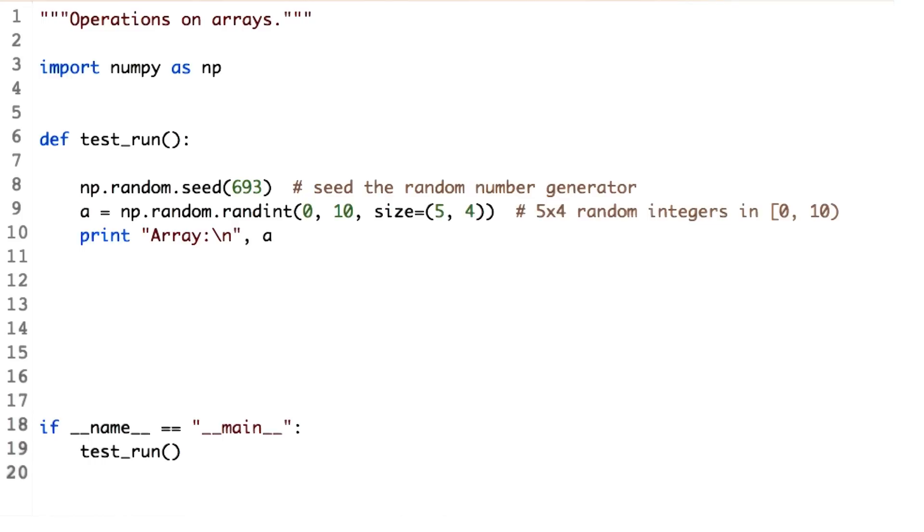Axis equal to zero signifies rows and axis equal to one indicates columns. Remember this terminology as you will use it frequently.